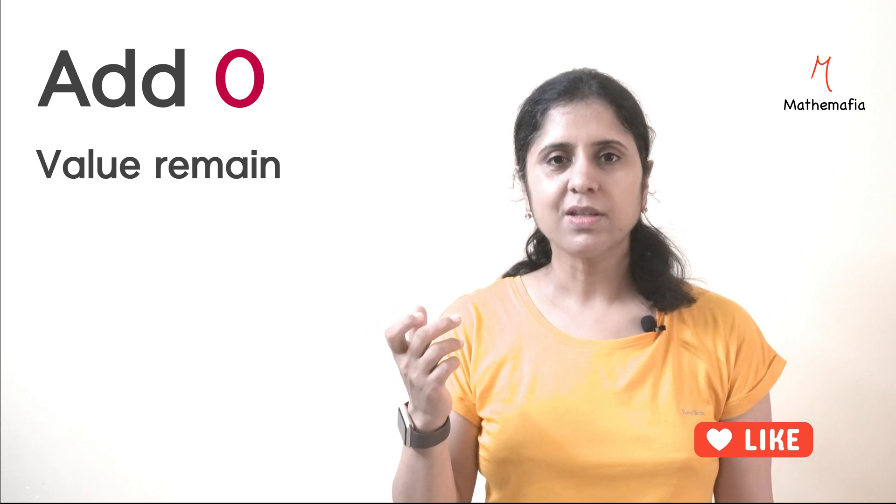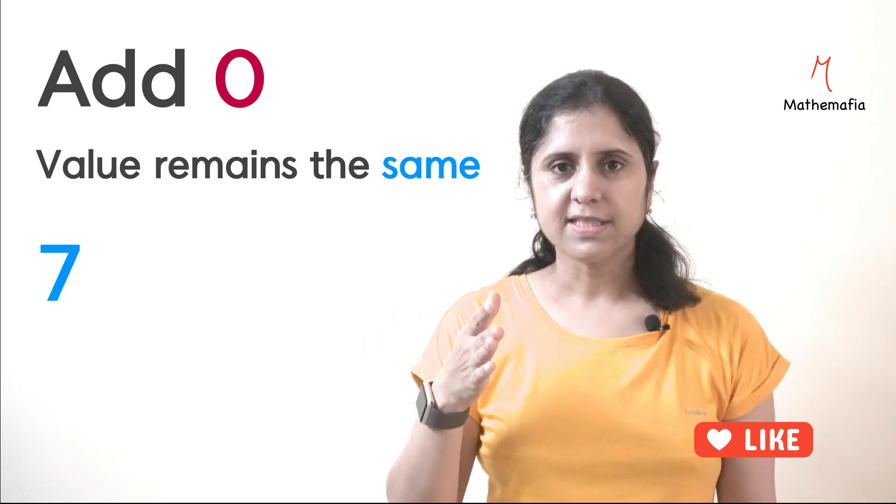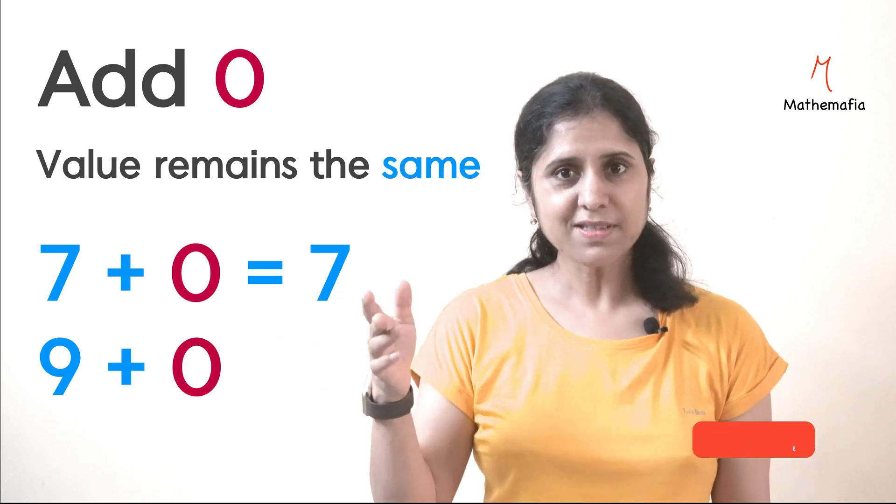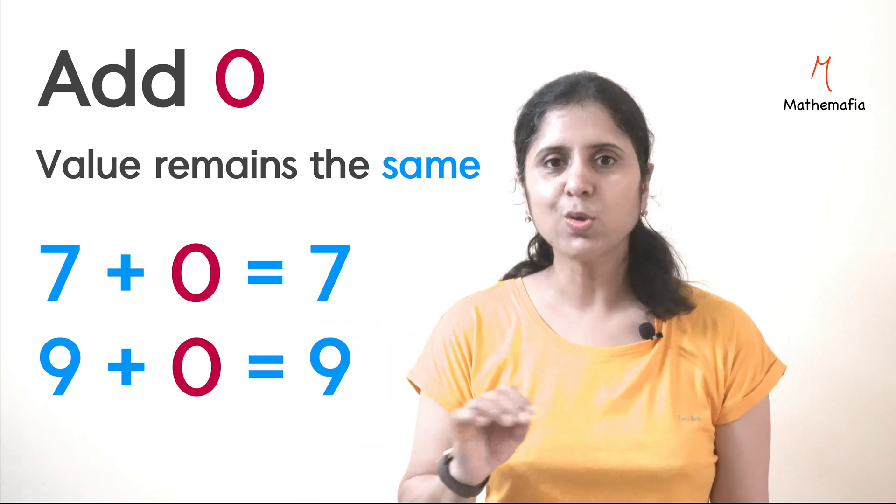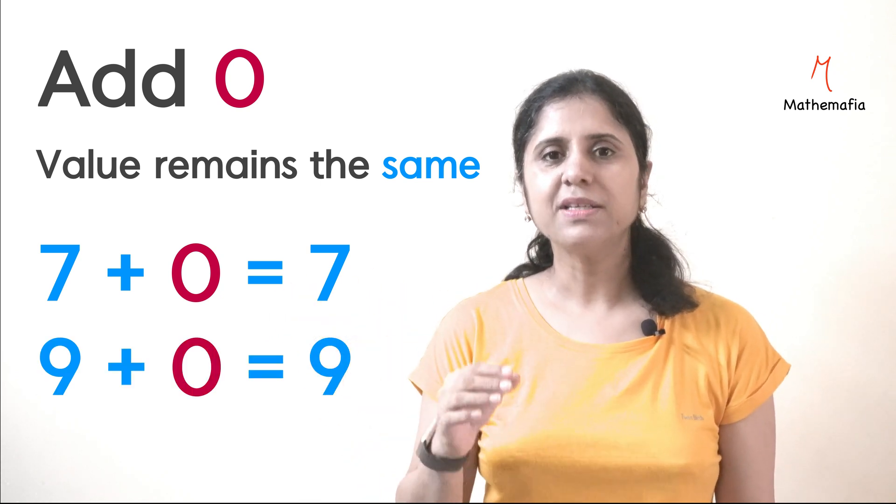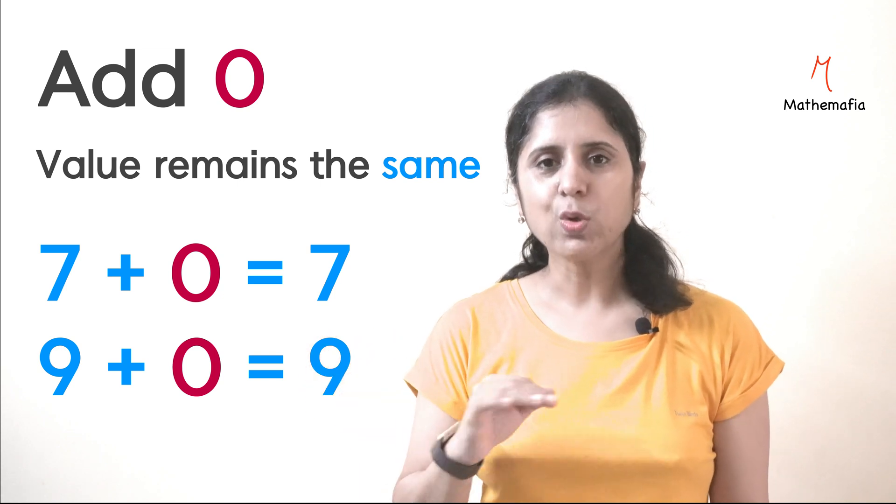However, if we add 0 to a number, the value remains the same. 7 + 0 = 7, 9 + 0 = 9. So there is no change in the value. Adding 0 to another number has no change in its value.